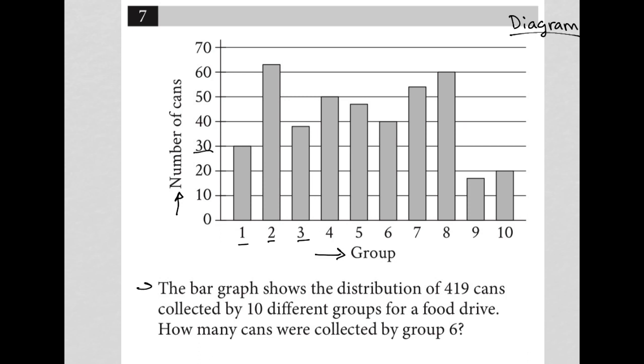The question goes on to say the bar graph shows the distribution of 419 cans collected by 10 different groups for a food drive. How many cans were collected by group six?